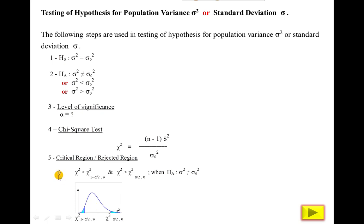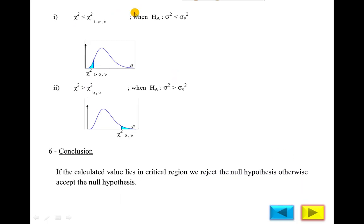The second option depends on less than, and the third option on greater than. For alternate hypothesis less than, we use 1 minus alpha — there is no alpha upon 2. For the right hand side, greater than, we use alpha — there is no alpha upon 2. So the left hand side shaded area uses 1 minus alpha, and the right hand side shaded area represents the rejected region when alternate is greater than.